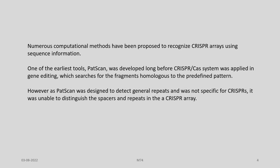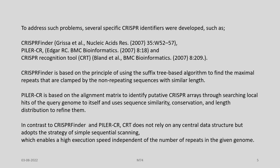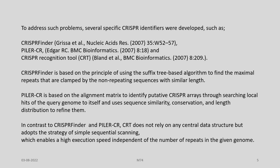Various computational tools have been proposed to recognize CRISPR arrays using sequence information. One of the earliest tools used was PET scan, but it was developed much before CRISPR-Cas9 was applied in gene editing. PET scan searches for fragments homologous to a predefined pattern and was not designed to detect specific CRISPR repeats — only general repeats — and therefore was unable to distinguish spacers and repeats in a CRISPR array. To address these problems, several CRISPR-specific tools were developed.